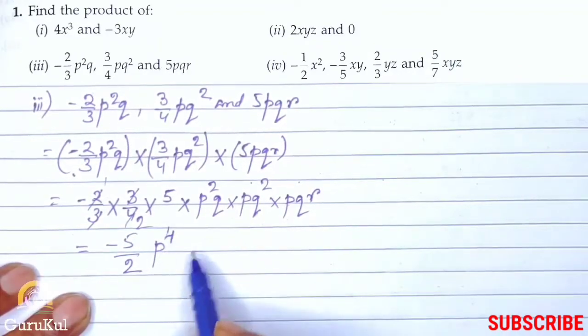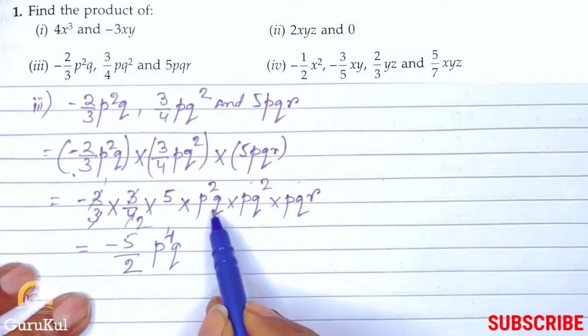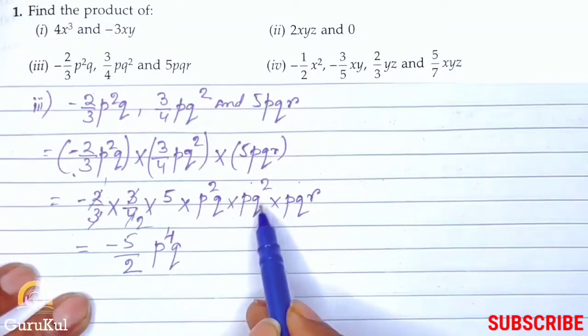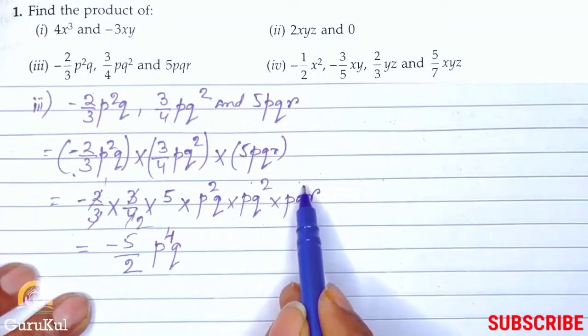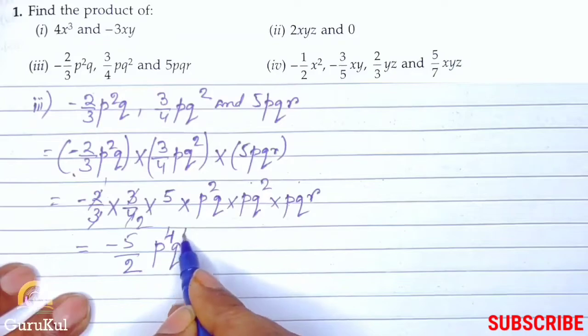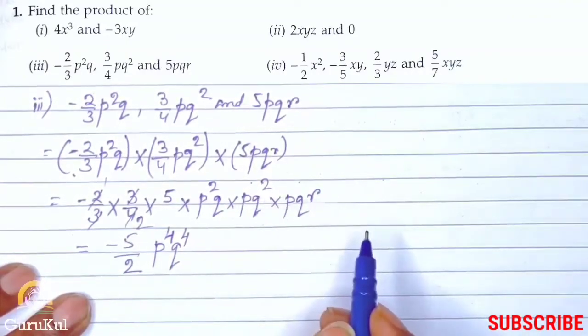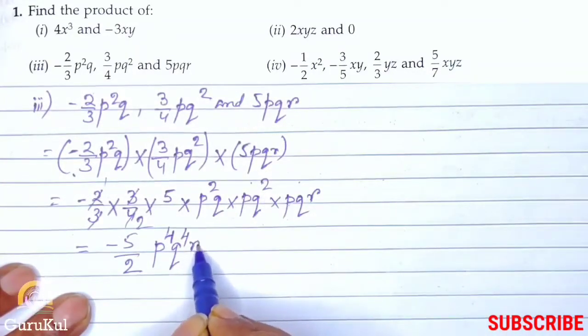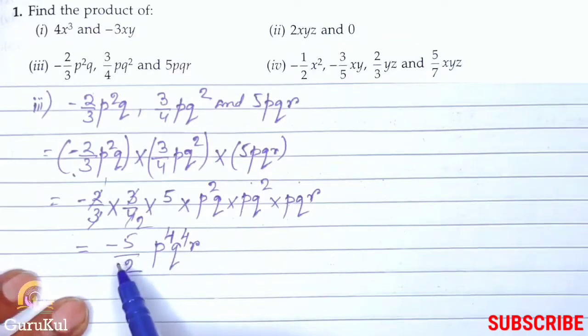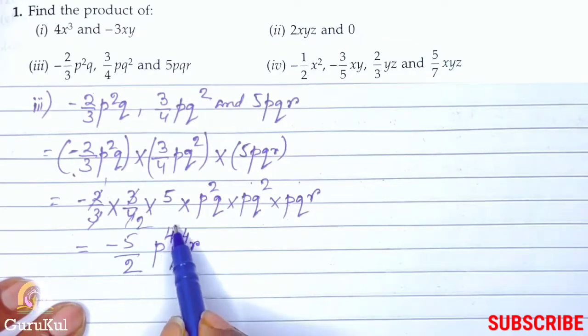We are going to add the powers of p, so 2 plus 1 plus 1 is p to the power 4. Then q: q to the power 1, q to the power 2, q to the power 1, so q to the power 4. And r is one. So the final answer is minus 5 by 2, p to the power 4, q to the power 4, r.